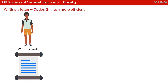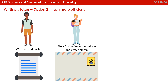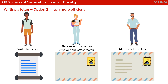With a little help from friends, the process can be made much quicker. One person starts writing the first invite. While he starts writing the second invite, a friend places the first invite into an envelope and attaches the stamp. That is passed to another friend who addresses the envelope, while the original person writes the third invite. This is a much more efficient method, and a similar mechanism is effectively what computers use when doing pipelining.